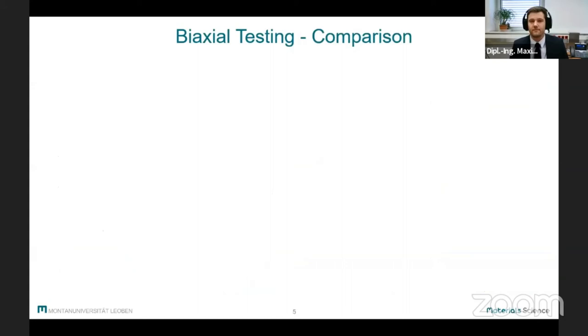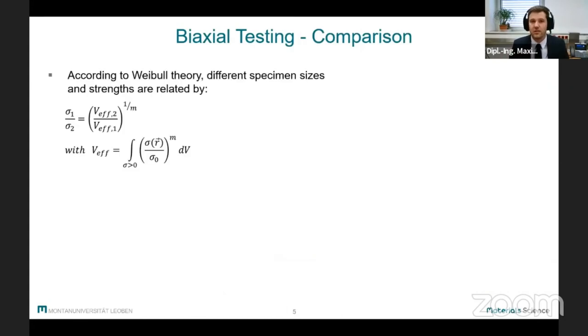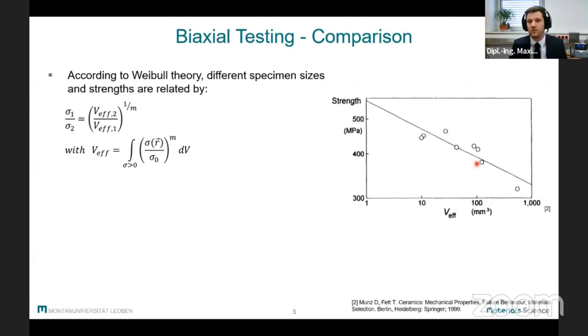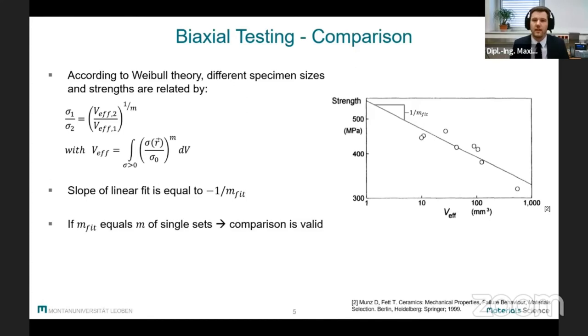So how do we actually compare the two methods? According to Weibull theory, there's a relationship between the effective volume and the characteristic strength, which is commonly known as the size effect. In theory, samples exhibit a lower strength with an increase in effective volume. If this graph is displayed on a double logarithmic scale, then the slope of a linear fit through all data points can be used to calculate the fitted Weibull modulus. So if the fitted Weibull modulus and the Weibull moduli of each set are about equal, this means that each result of one method can be converted to a result of the other method.